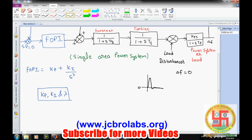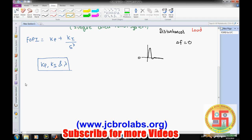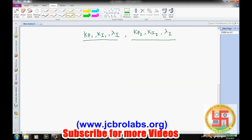For two area power system we will be having two FOPID controllers. The parameters will be listed like KP1, KI1, lambda 1 for one area FOPID controller, and then KP2, KI2, and lambda 2 for the second area FOPID controller. We will be trying to optimize these parameters so delta f becomes zero.